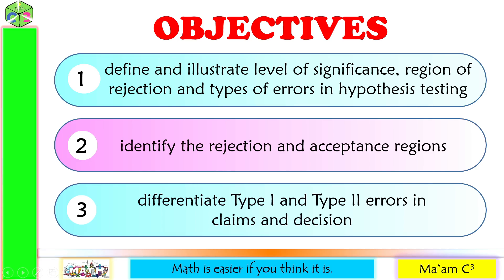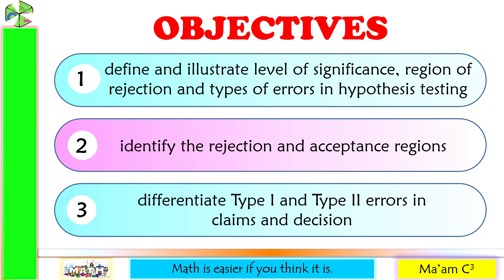Our objectives in this lesson are the following: define and illustrate level of significance, region of rejection, and types of errors in hypothesis testing. Identify the rejection and acceptance regions, and differentiate type 1 and type 2 errors in claims and decision.